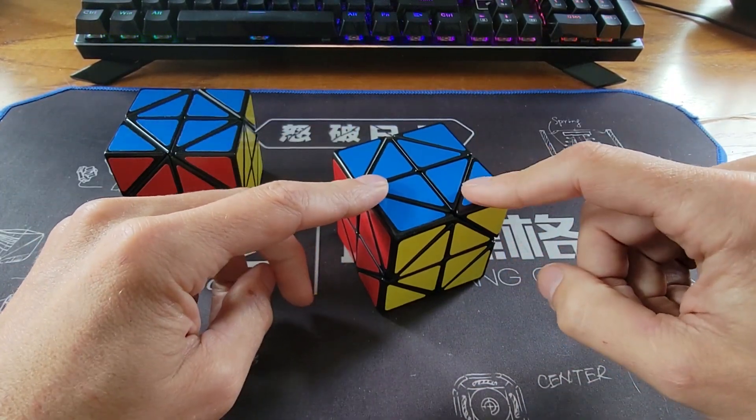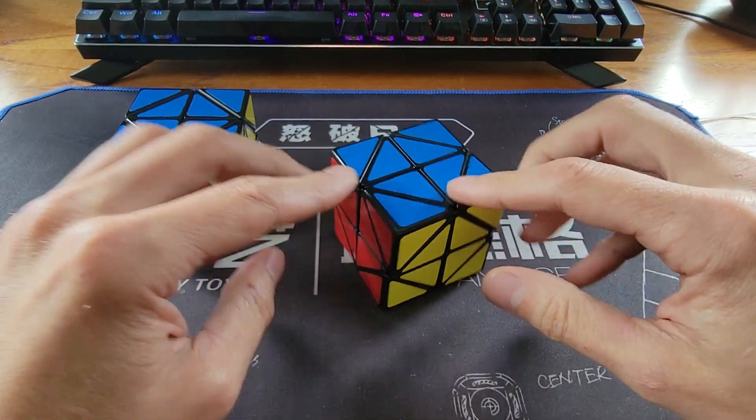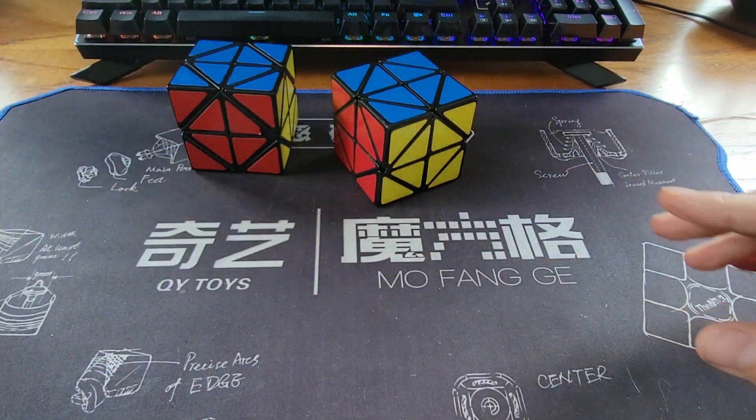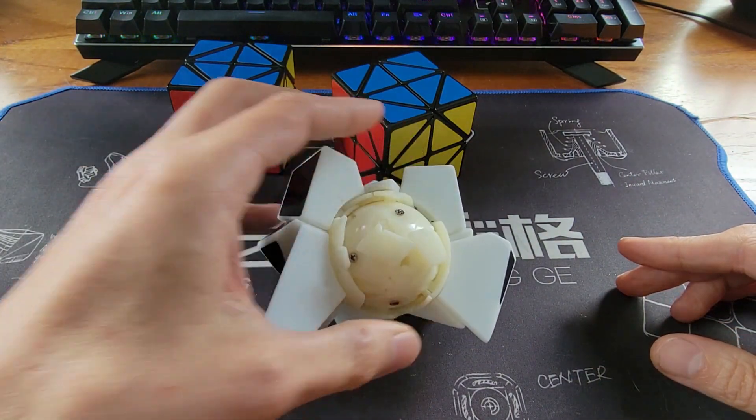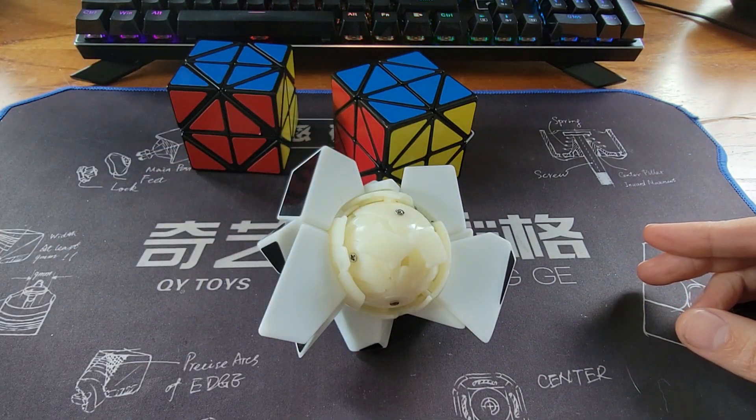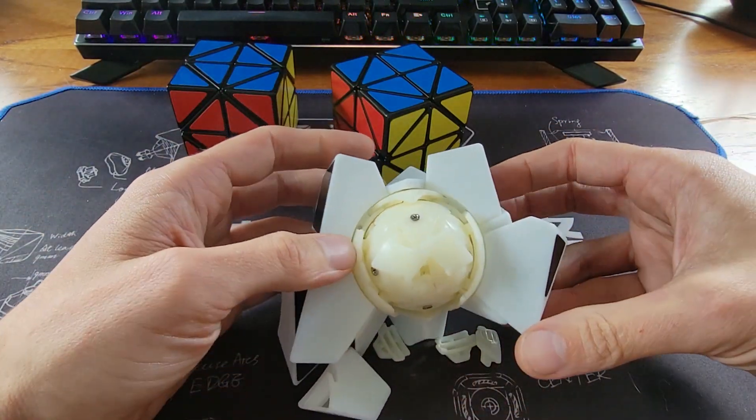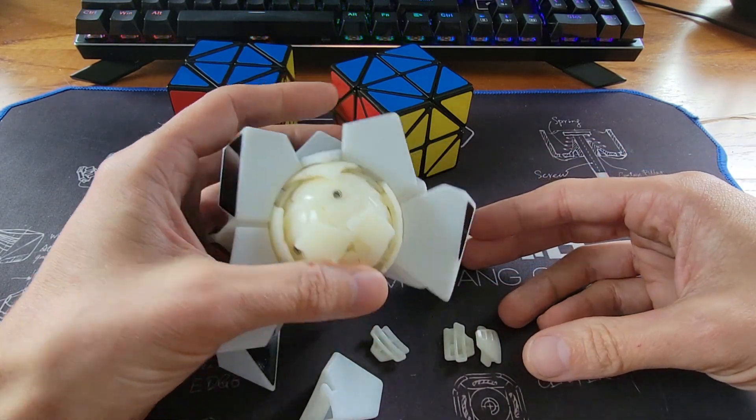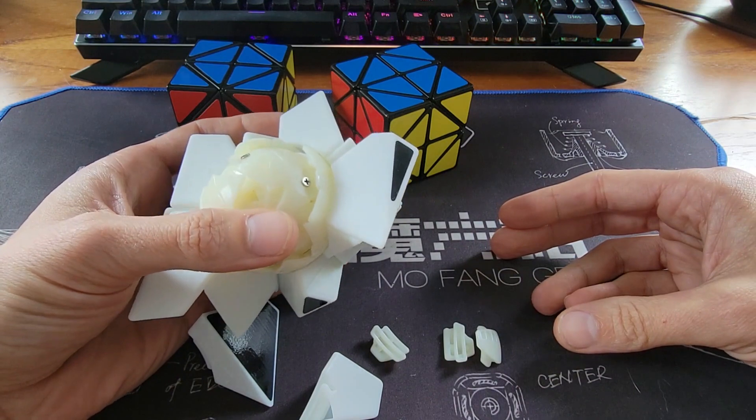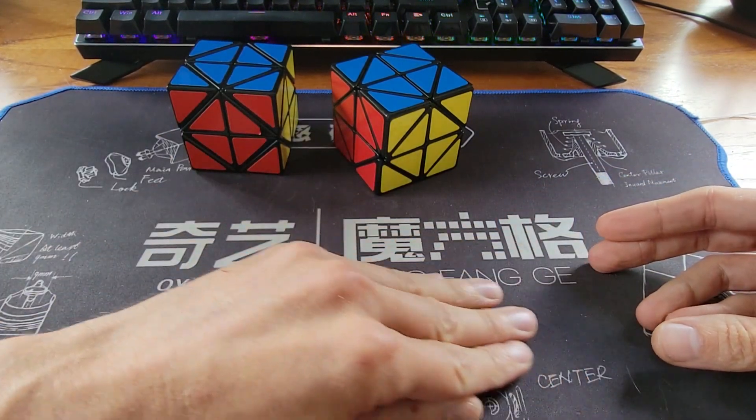Before this 2x2 cube was released, the ghost version of it was released. I have that here. I'll show you what mine looks like. It popped on me. And with all the internal pieces it has and it being a ghost cube, I don't think I'll be able to put it back together sadly. So that's in the puzzle graveyard for now.